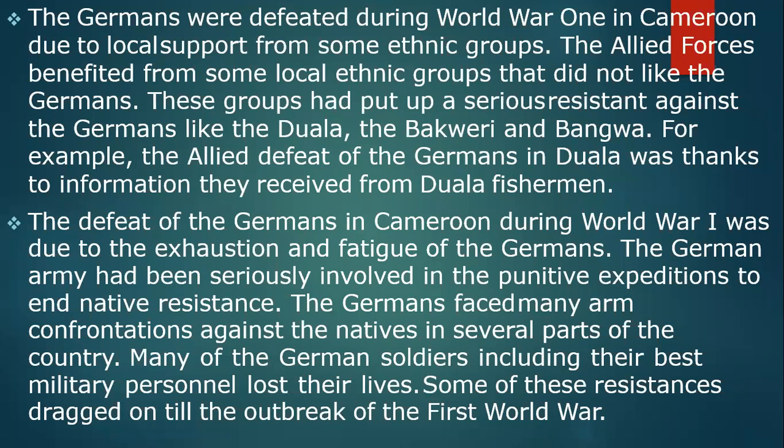The Germans were also defeated due to local support from some ethnic groups. The Allied forces benefited from ethnic groups that did not like the Germans — groups like the Douala, the Bakweri, and the Bangwa, who had mounted serious resistance against the Germans. For example, the Allied defeat of the Germans in Douala was thanks to information received from Douala fishermen.